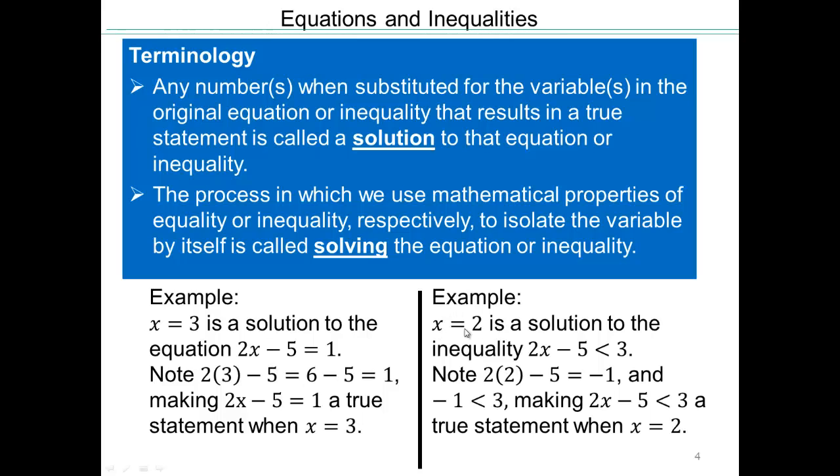Let's try x equals 2 in this inequality. 2 times 2 is 4. 4 minus 5 is negative 1. And negative 1 is smaller than 3. So x equals 2 is a solution of this inequality.